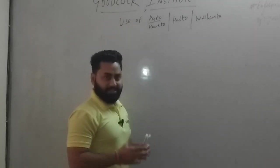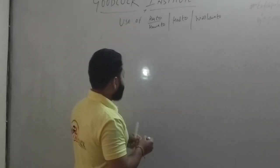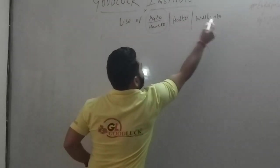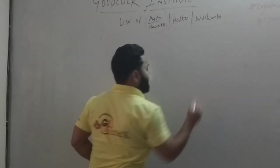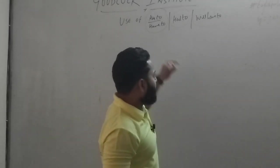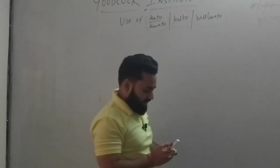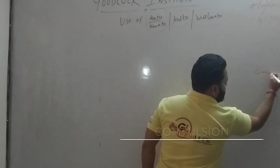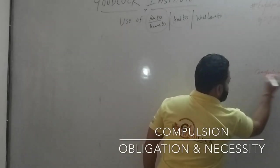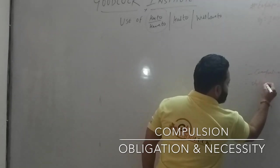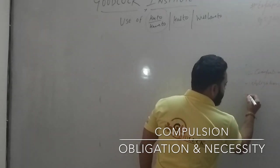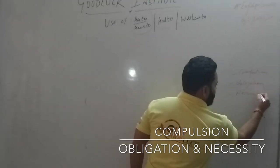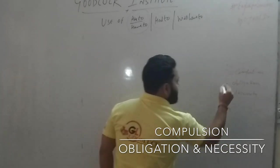As I have told you today, we are going to learn the use of has to, have to and will have to. Before we begin, I just want to tell you — we have to use these forms in sentences that express either compulsion, meaning it's necessary, or obligations, meaning it's a job or duty.